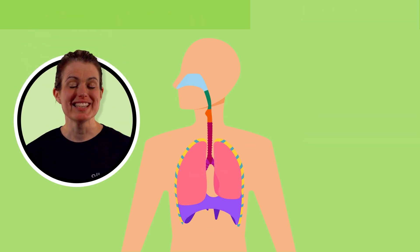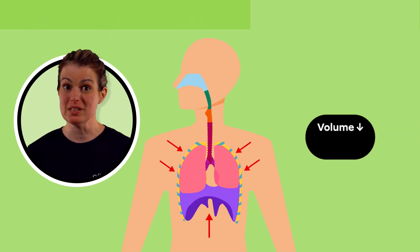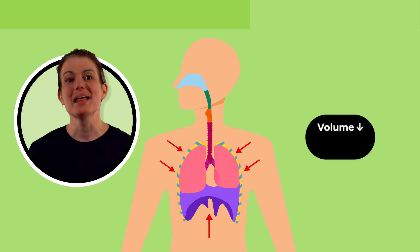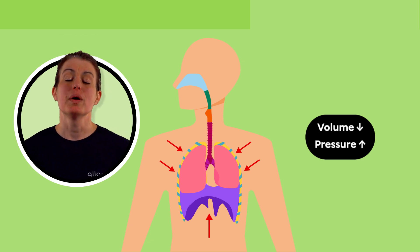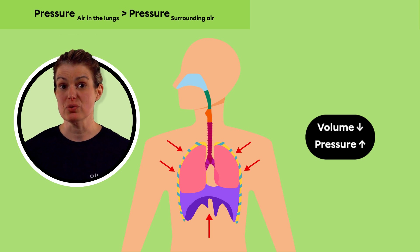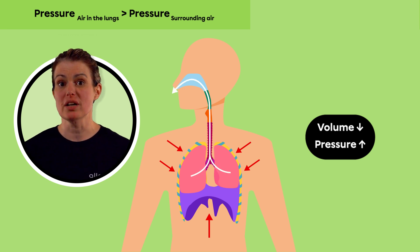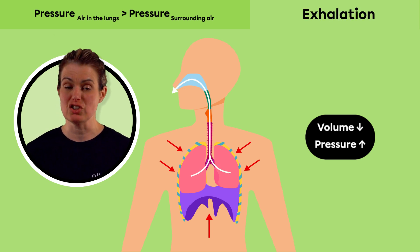In contrast, since the relaxation of the respiratory muscles decreases the volume of the chest cavity, the pressure in the lungs increases. When the pressure in the lungs is higher than the pressure of the surrounding air, air leaves the lungs through the airways. This is called an exhalation.